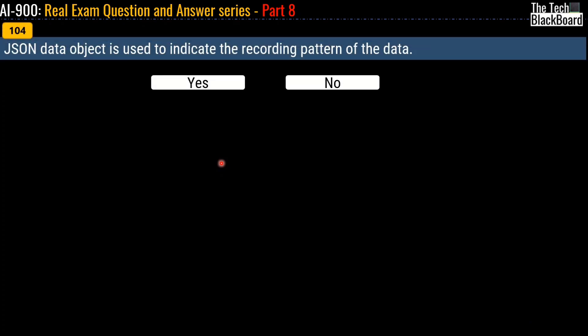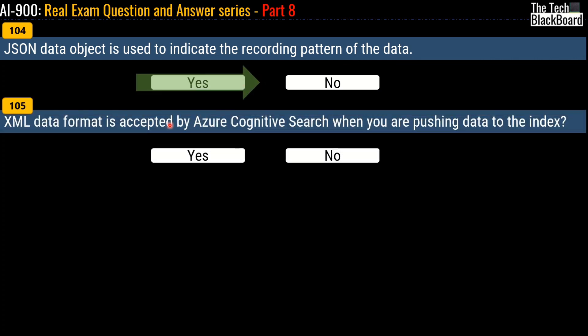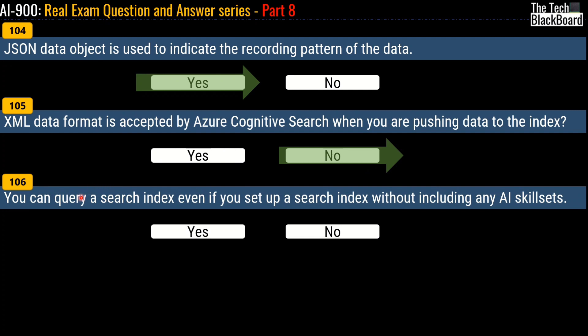Question 104: JSON data objects are used to indicate the recording pattern of the data — the correct answer is Yes. Question 105: XML data format is accepted by Azure Cognitive Search when pushing data to the index — the correct answer is No. Question 106: You can query a search index even if you set it up without including any AI skill sets — the correct answer is Yes.